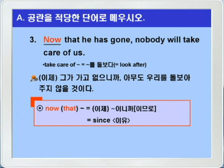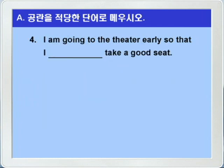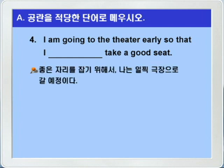그럼 정답을 확인해보고 4번으로 가겠습니다. 4번입니다. I am going to the theater early so that I blank take a good seat. 나는 일찍 극장으로 갈 예정이다. so that I blank take a good seat. 내가 좋은 자리를 잡기 위해서. 정리해보면, 좋은 자리를 잡기 위해서 나는 일찍 극장으로 갈 예정이다.